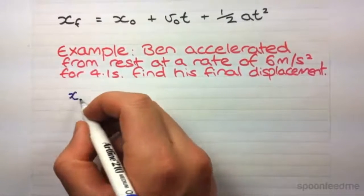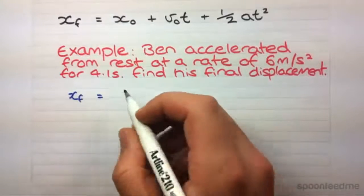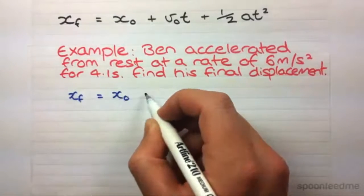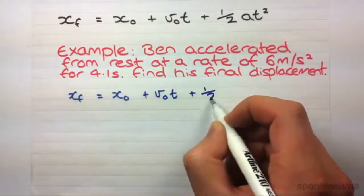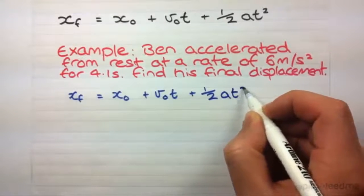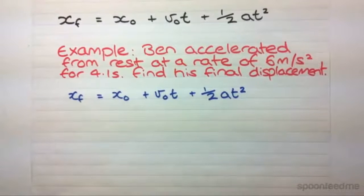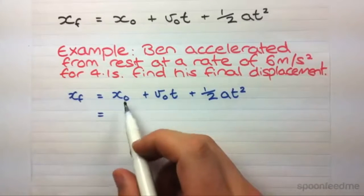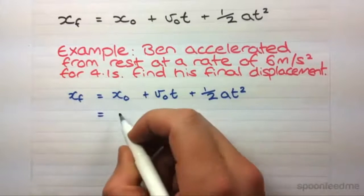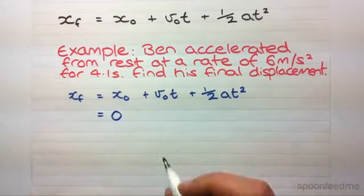Number one thing we've got to do here. Really beneficial marks wise in exams is write down the equation we're using because that shows that we understand what we're doing. It can even be worth a mark if we write nothing else. Then it's just a matter of subbing in the information we've got. So, initial displacement, if it doesn't give you one, we'll just define it as zero.